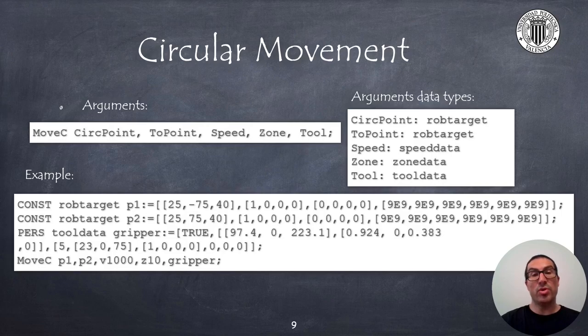In Robot Studio, two contiguous rectilinear motions can be converted to a circular motion. The instruction only allows to perform arcs. Therefore, to make a complete circle, we must use two consecutive circular motion instructions, as we will see next.